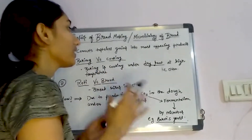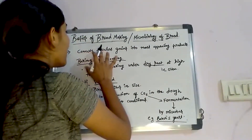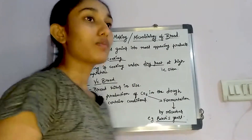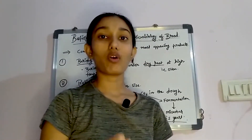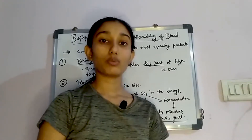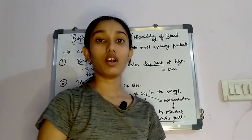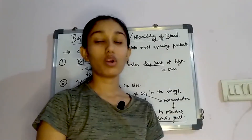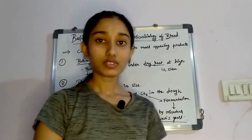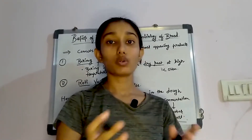Bread making procedure converts tasteless grains into most appealing products. The raw material is grain — wheat or rye — which is first converted into flour, then dough is made, and then the final product is in our hands. Just like roti: first we knead the flour, then the roti is cooked.